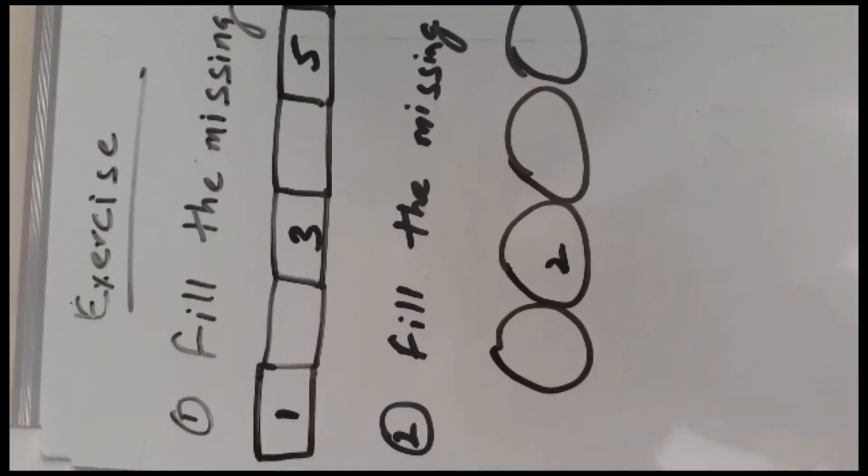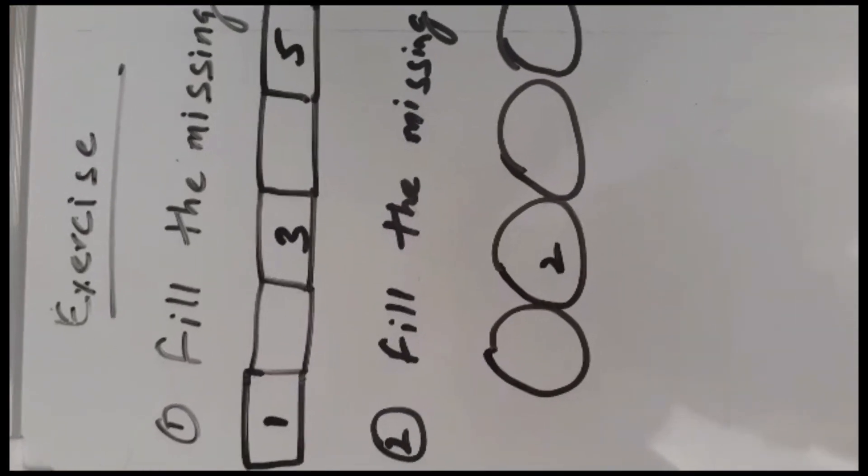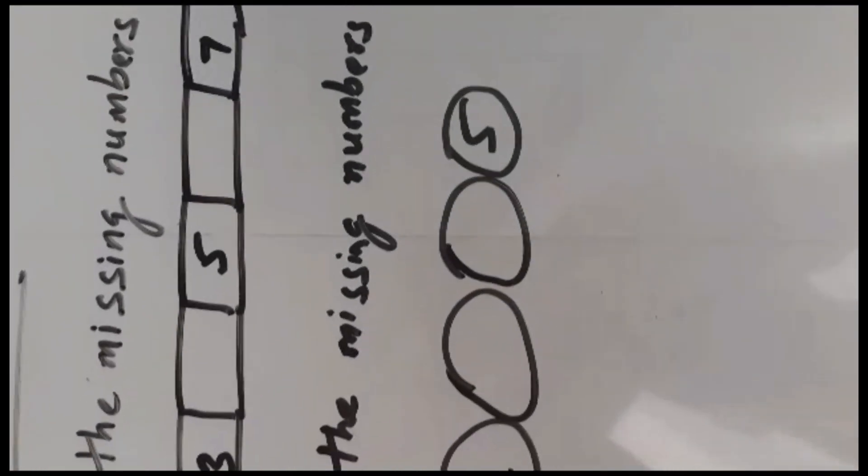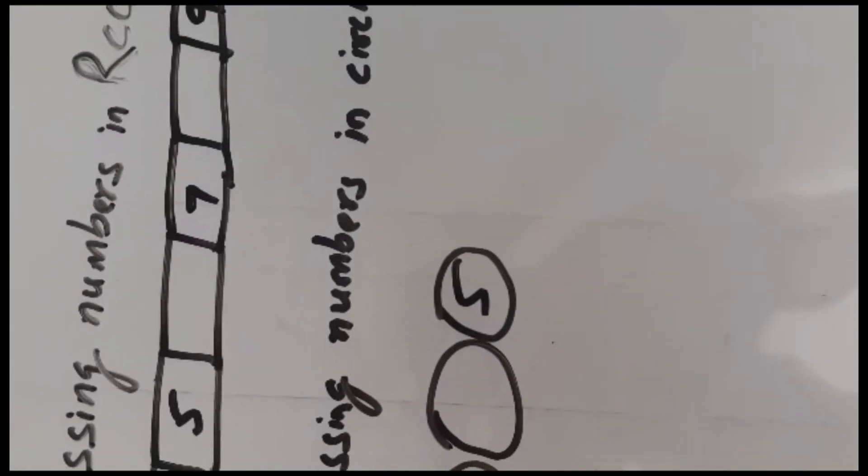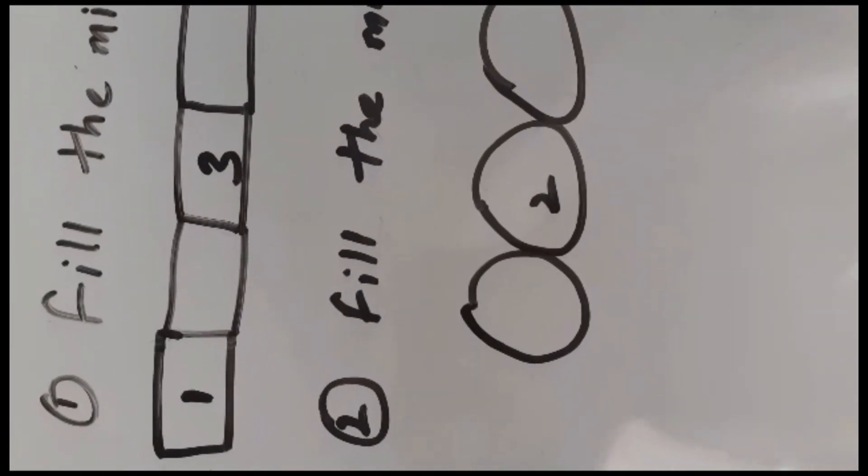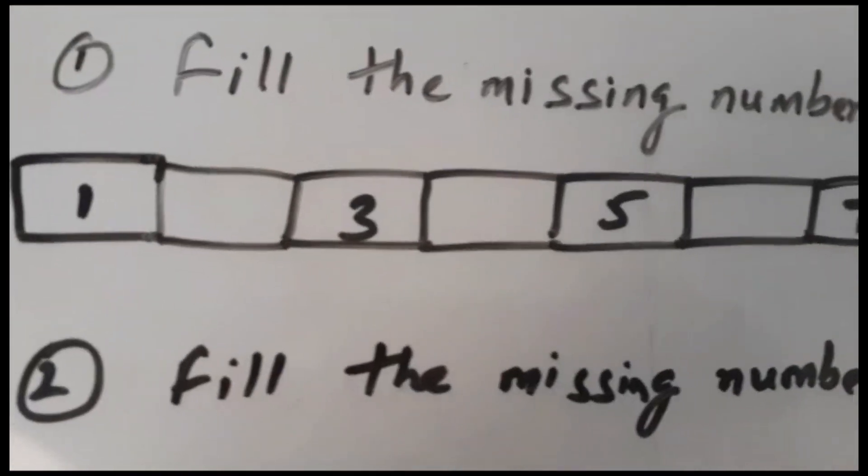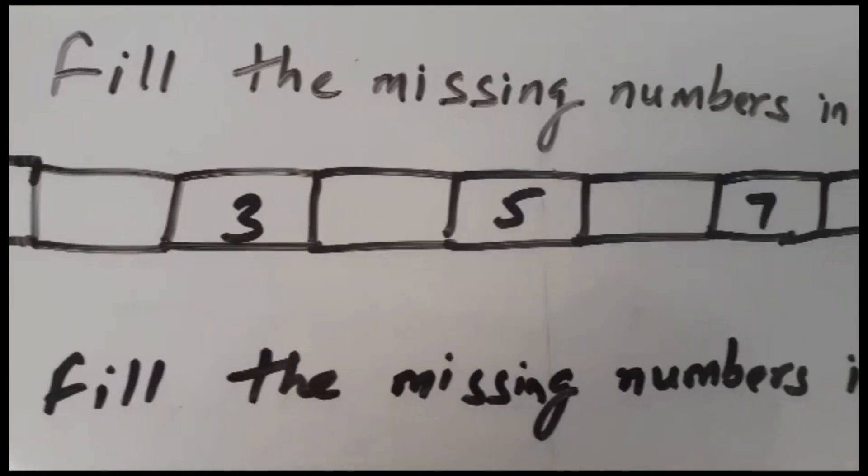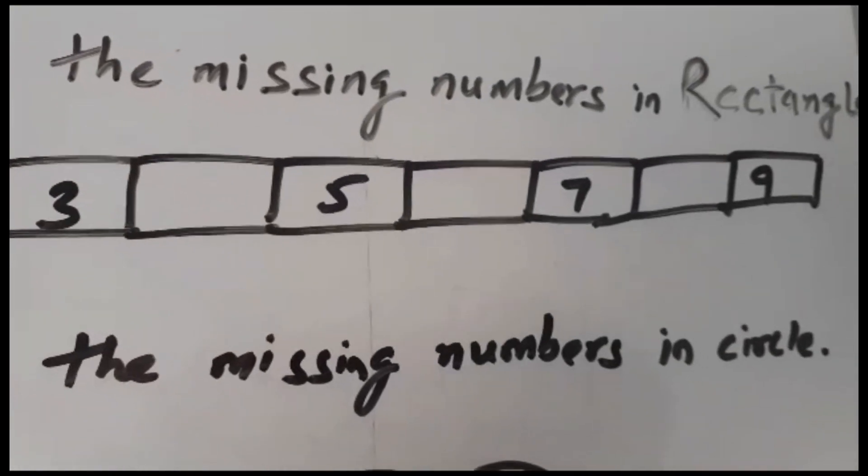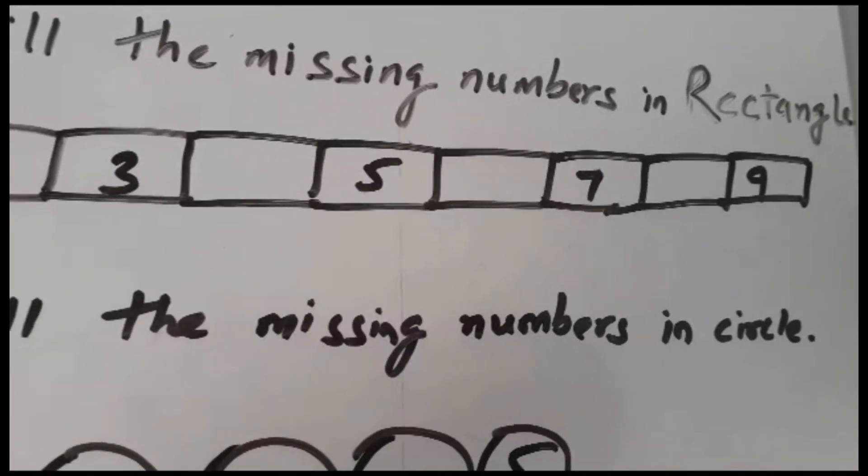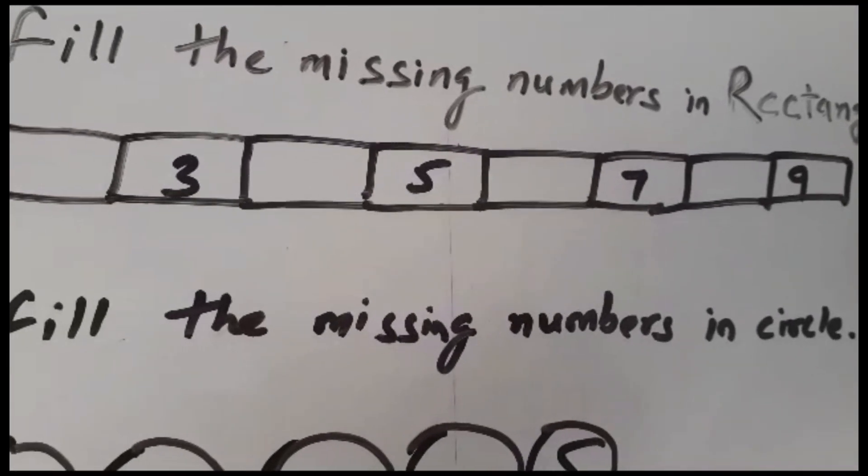So my friends, now it's time to do some exercise, some problem solving. Fill the missing numbers in the rectangle. For example, here I have made a rectangle, you can see. It is 1 and there are missing spaces, so you have to fill the missing spaces. Give me the solution in the comment section.